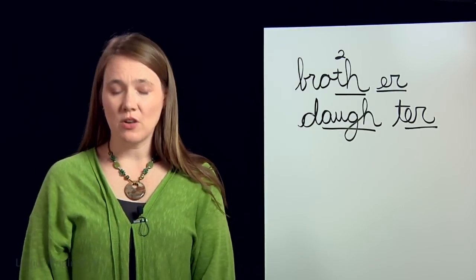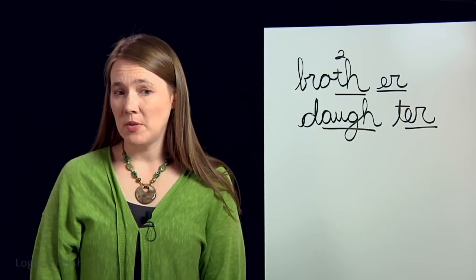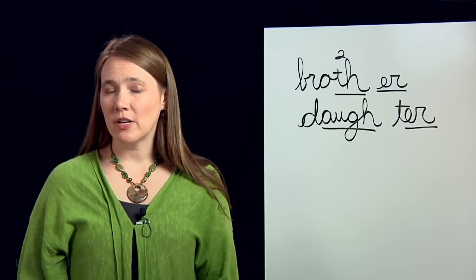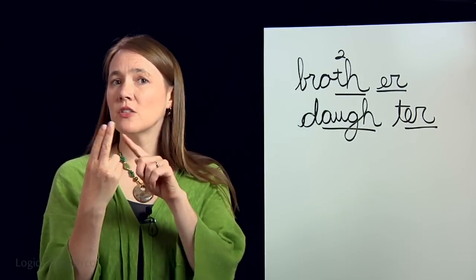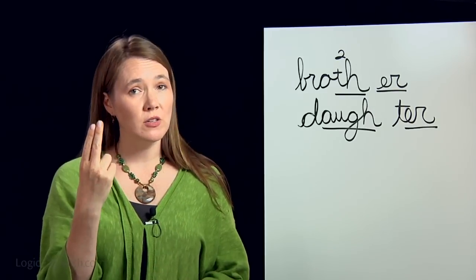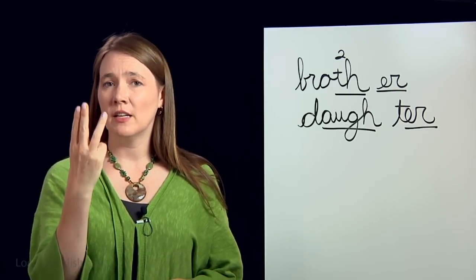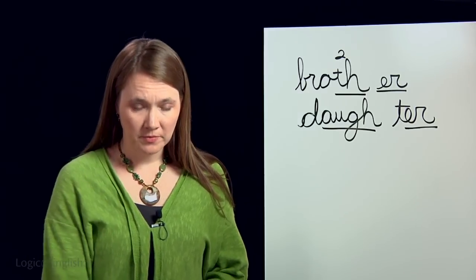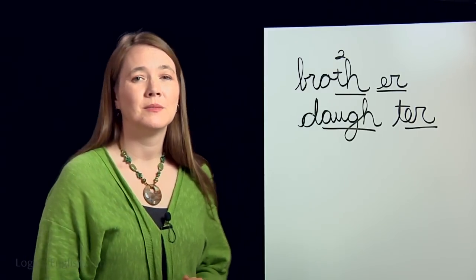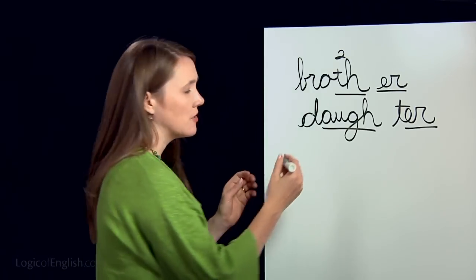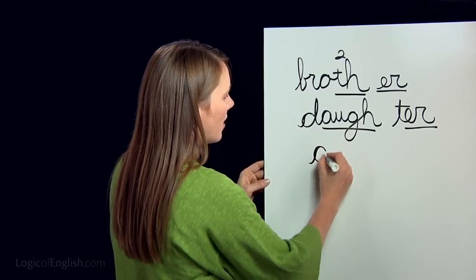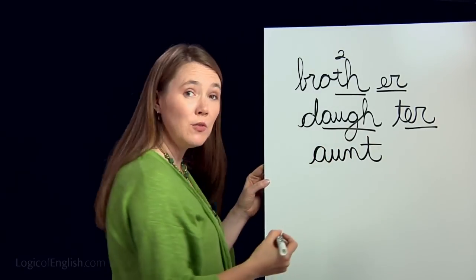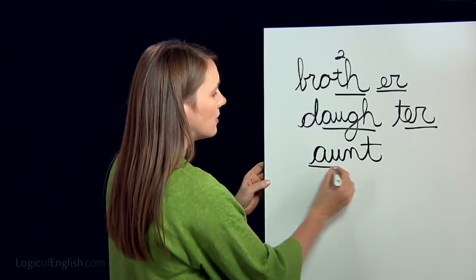The next word is 'aunt' — 'My aunt plays the piano.' Sound it out: aw-nt. This is the two-letter 'aw' that you may not use at the end of English words, then N-T. Write it: aw-nt. Underline the 'aw.'